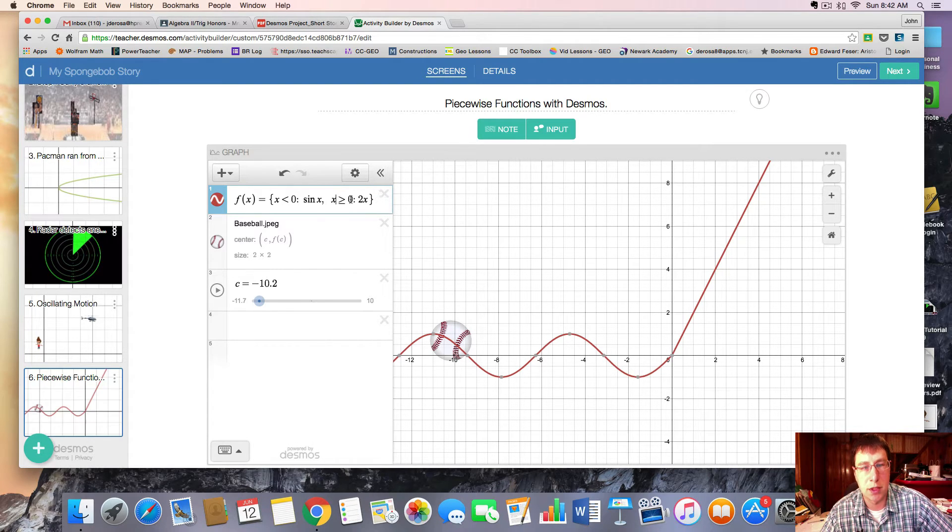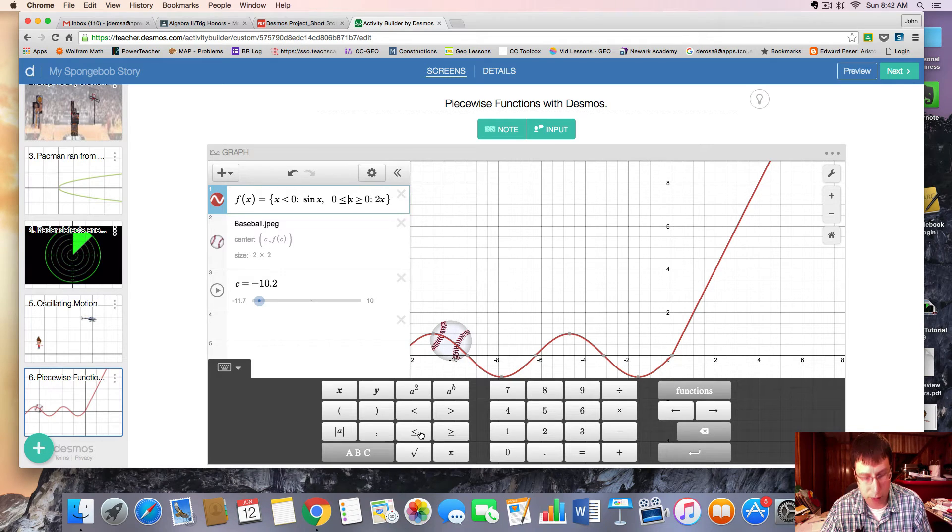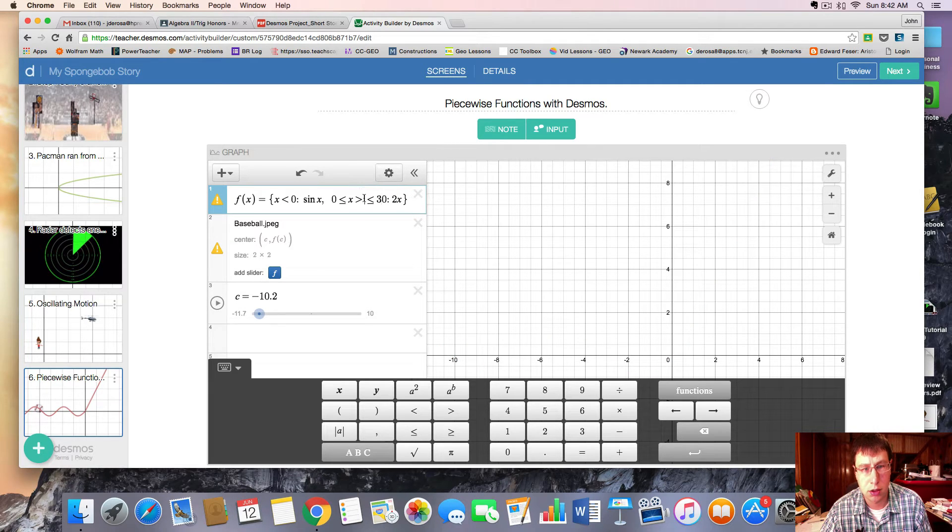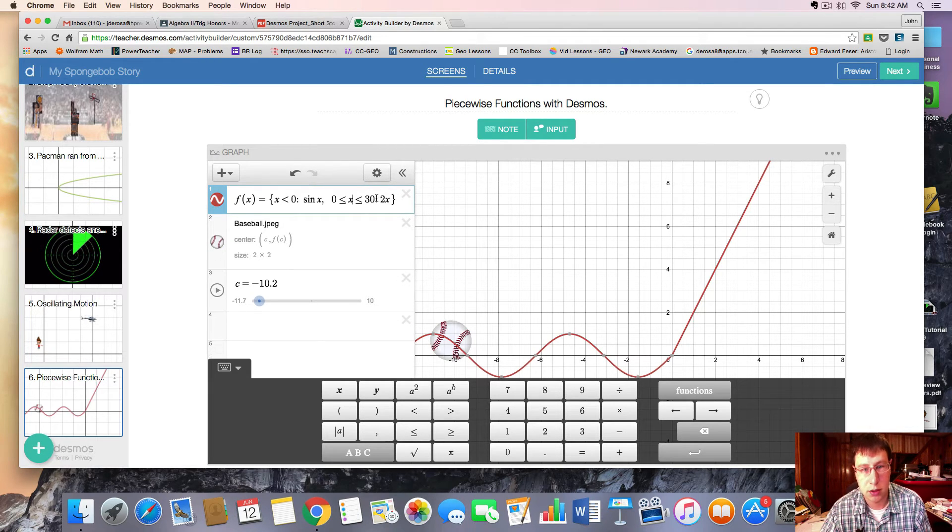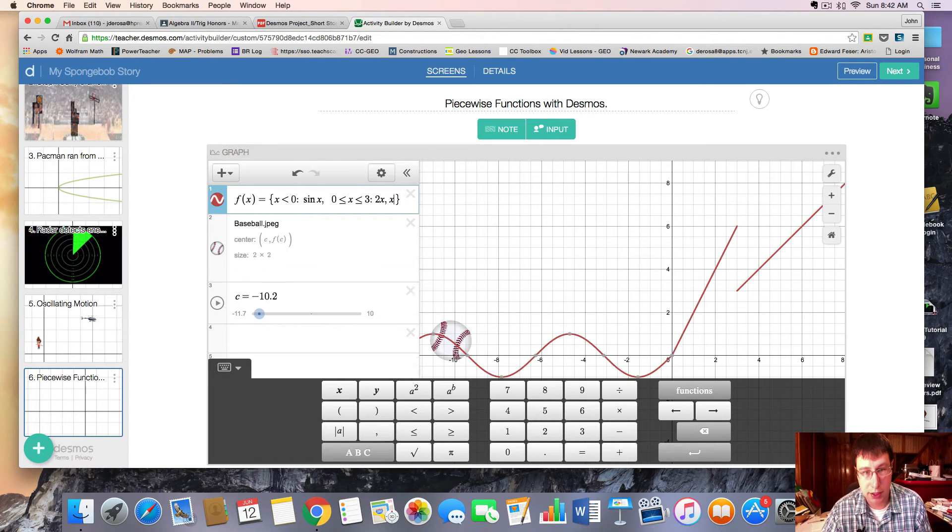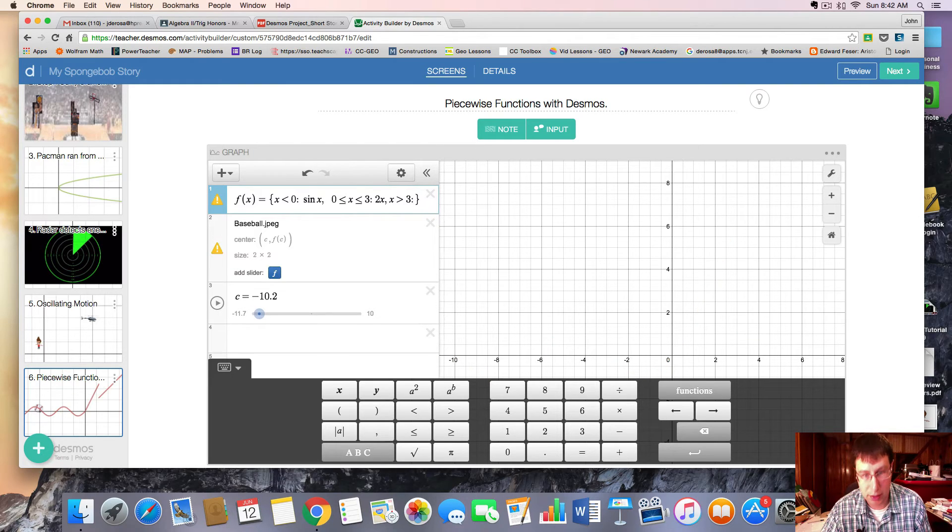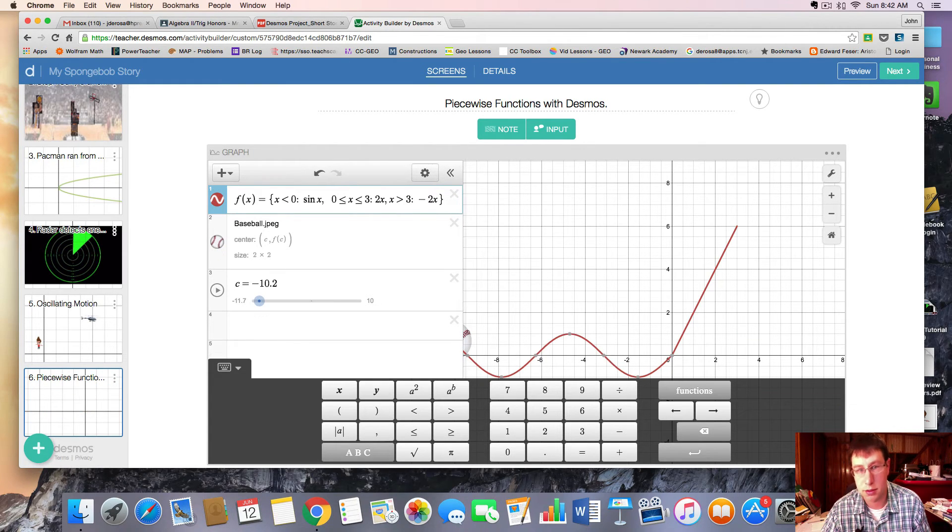And that would be your piecewise function. Now, let's say you wanted to increase it or change it back, let's say x equals 3 or something. Then you would have to change this from zero, almost like domain and range. When x goes from zero to three, you want to follow 2x and then another comma to split it again. And you'll say when x is greater than three, you want to go back down and say negative 2x is the function rule you want to follow there.